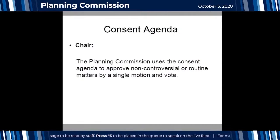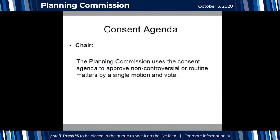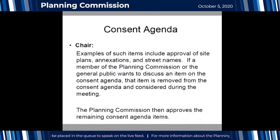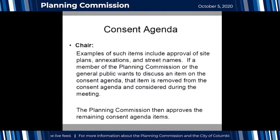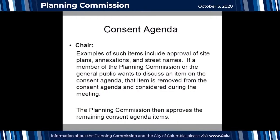The Planning Commission uses the consent agenda to approve non-controversial or routine matters by a single motion and vote. Examples include approval of site plans, annexations, and street names. If any Commission member or member of the public wants to discuss an item, it is removed from the consent agenda and considered separately during the meeting.